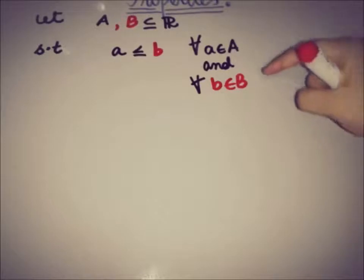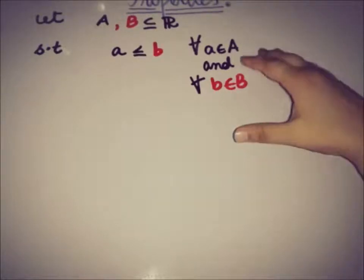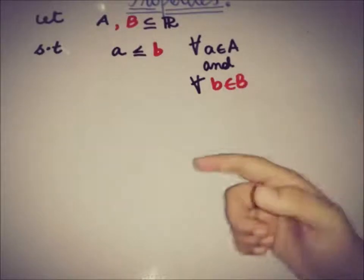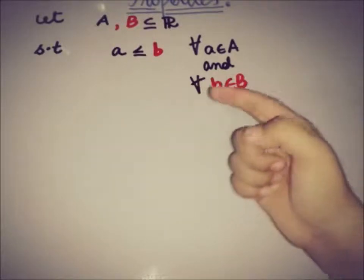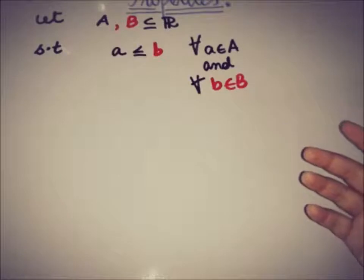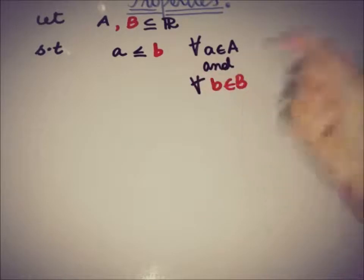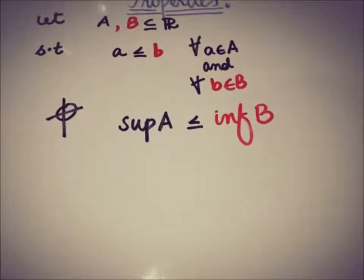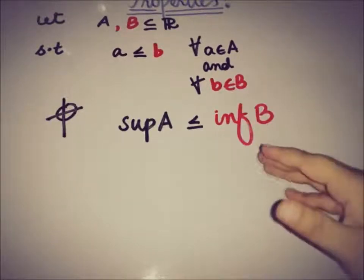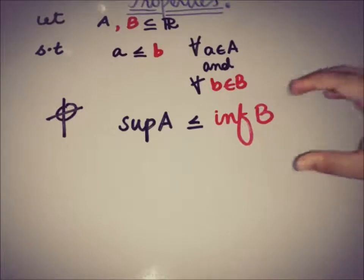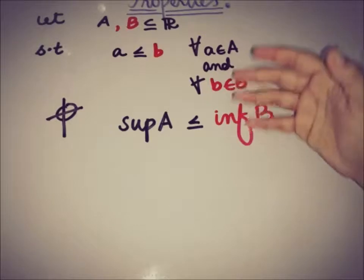So we have two subsets A and B of ℝ, and we know the relation between the elements of A and B: every element of A is less than every element of B. The target is to show that supremum of A is less than or equal to infimum of B. We have to prove this inequality using the given relation.